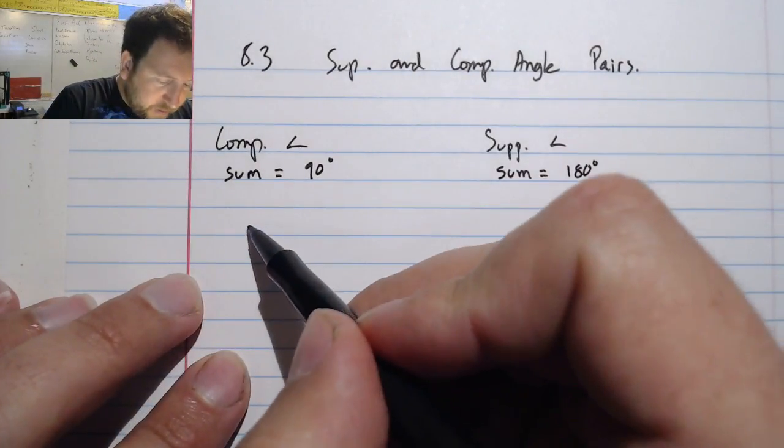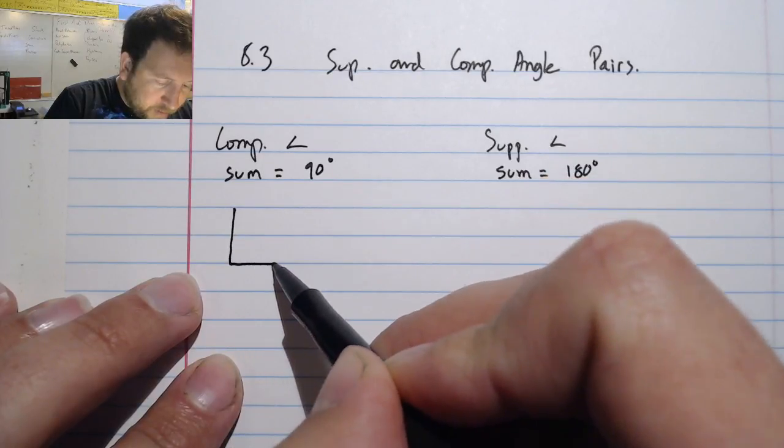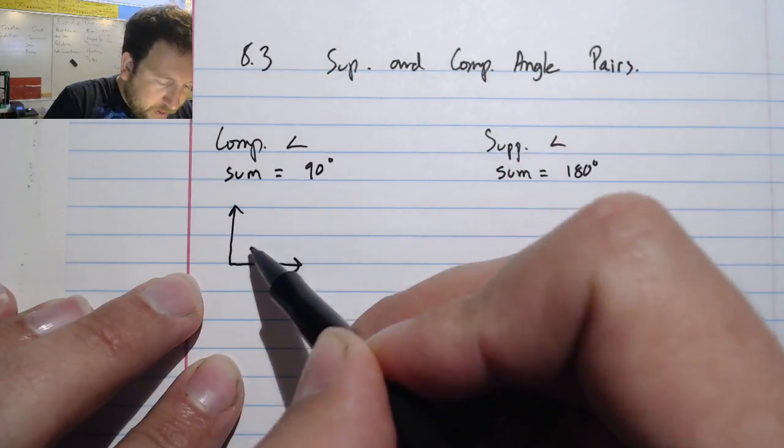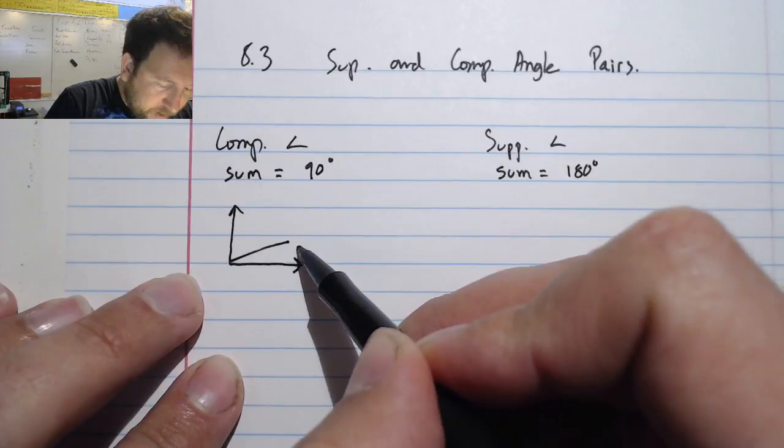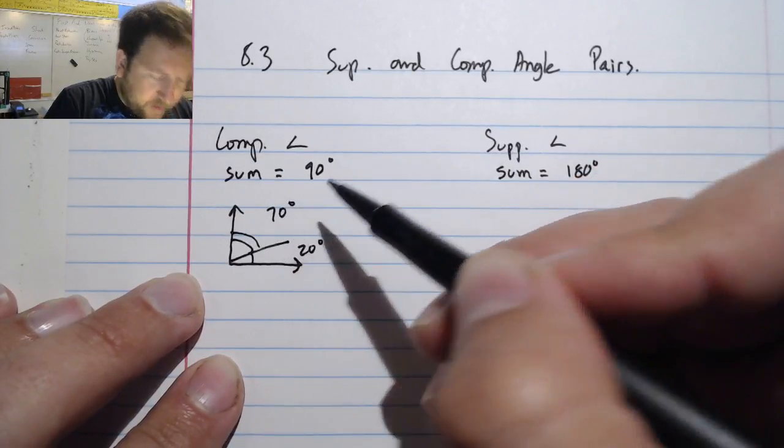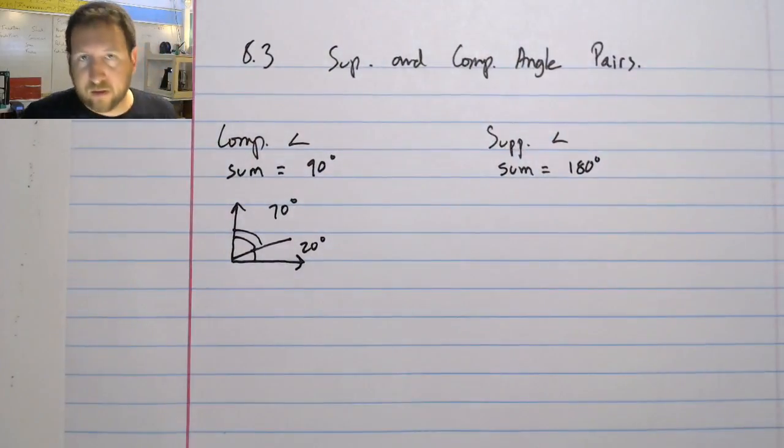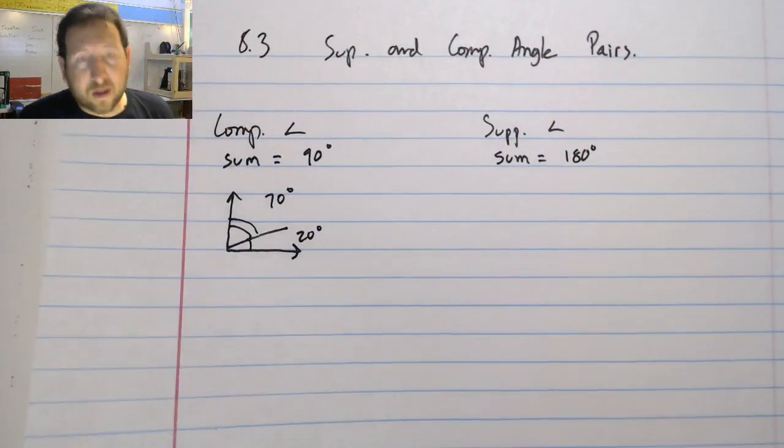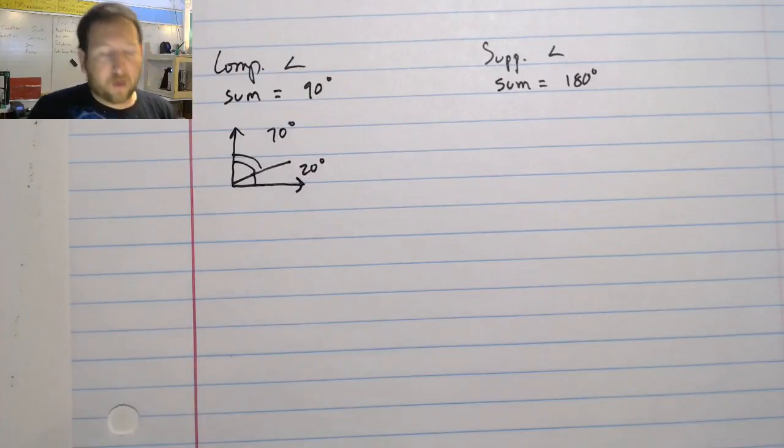Quick example of our complementary. Say I make my right angle like this. And say I have like this and I have 20 degrees here and I have 70 degrees here. I can see that this obviously totals up to 90. But what can start to happen is that they're going to ask me questions like this.